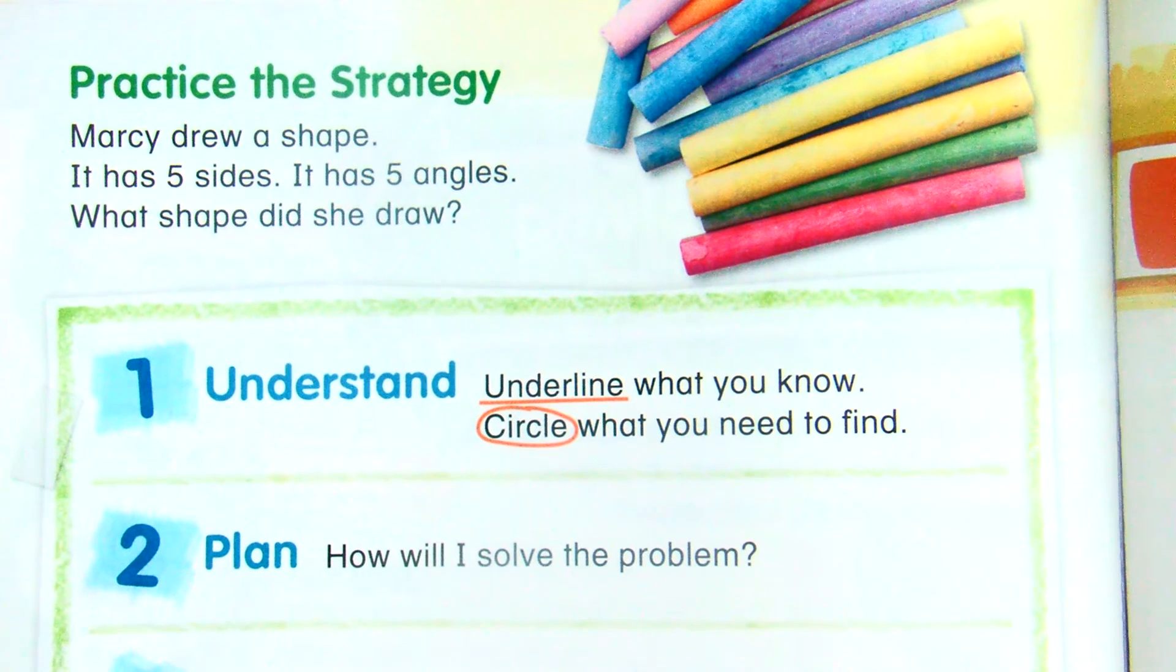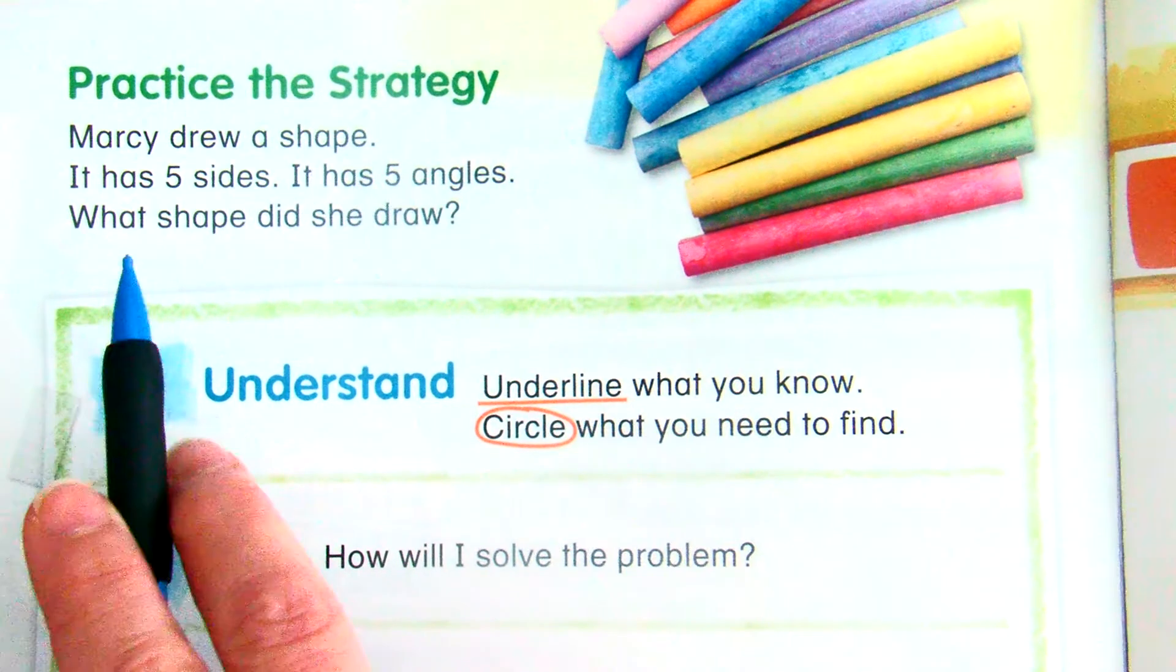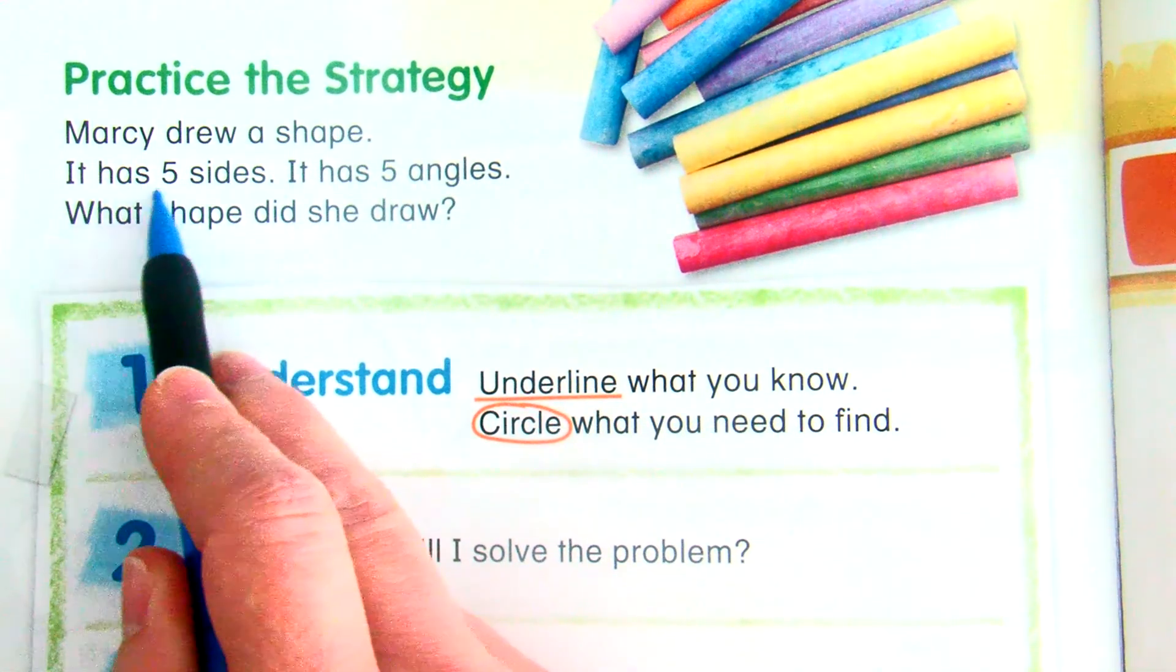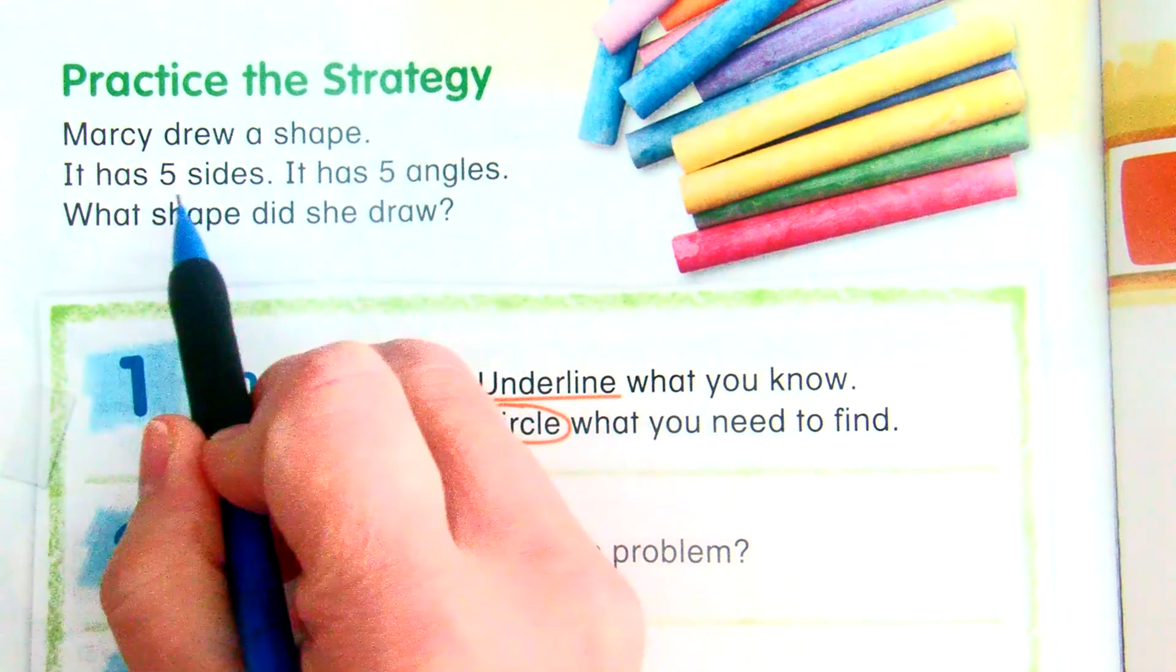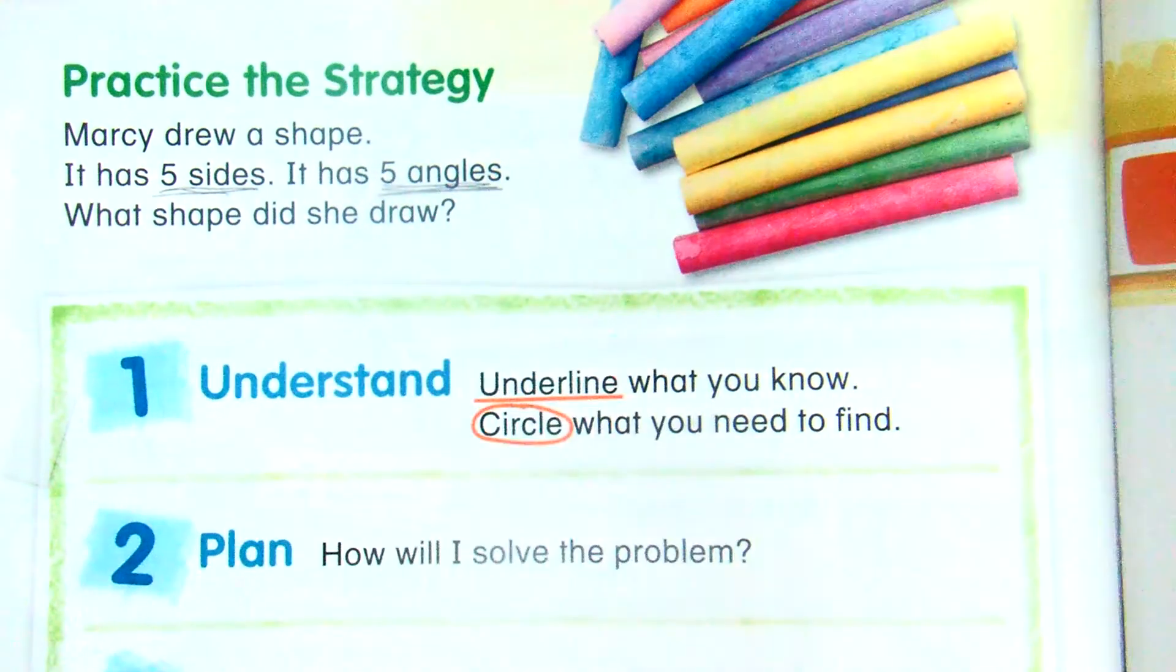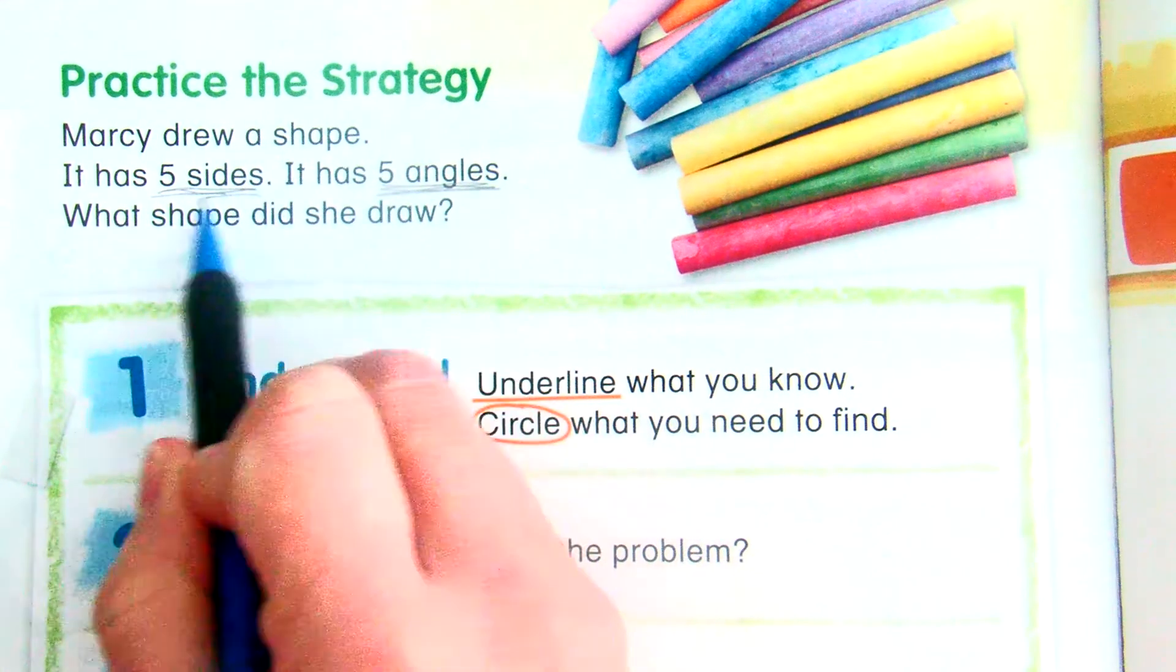Remember when you're doing word problems, you can underline what you know. I know it has five sides. I know it has five angles. I want to circle my question.